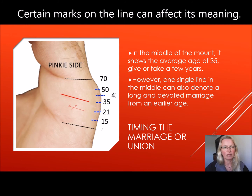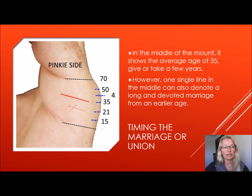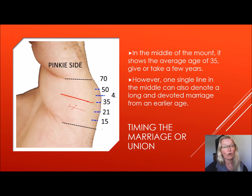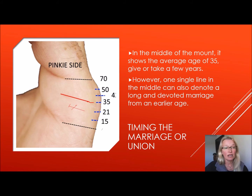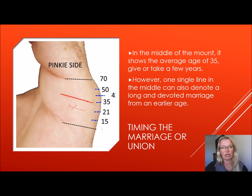Next, we talk about timing. So if there is a line in the middle, that is an average age of 35 — that is when the person might marry or become attached. However, one single line in the middle can also denote a long and devoted marriage that starts at an early age. I have spoken to couples in their 60s and 70s who've been married since they were 18 or 20, and they have one single line in the middle.